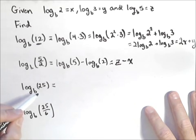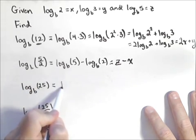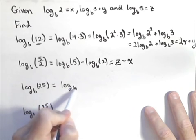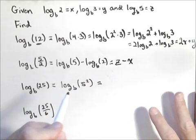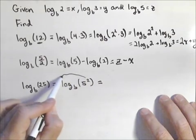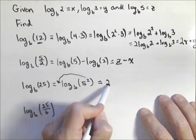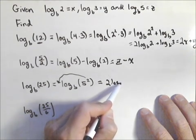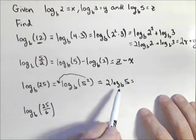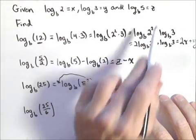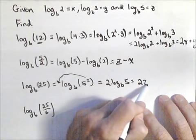Log base b of 25. We could rewrite that as log base b of 5 squared, which, from our property of logs that allows us to pull the exponent out front, that's 2 log base b of 5. Log base b of 5 is z, so 2 times z.